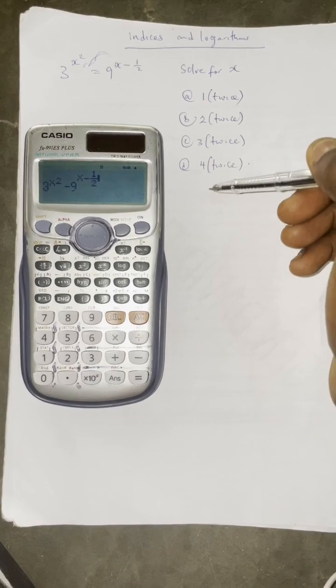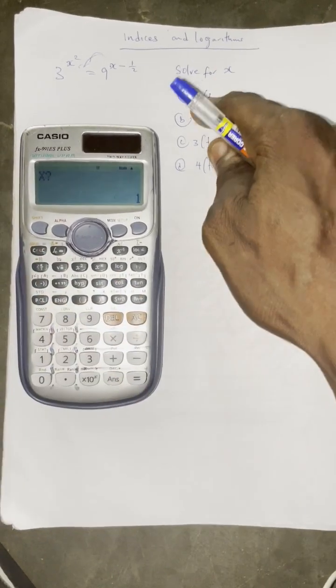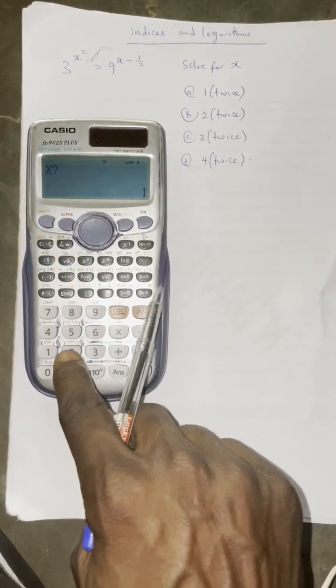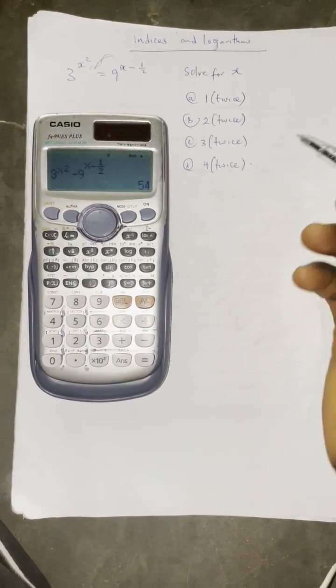Press calculate, the first option one, then press equals. That gives us zero. Now press calculate, press option two, then equals. Two is not equal to zero.